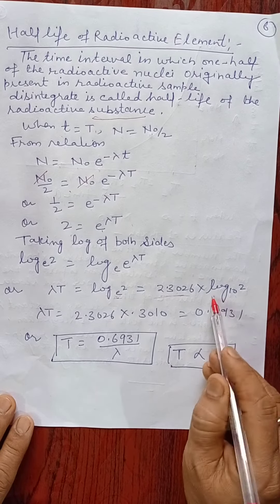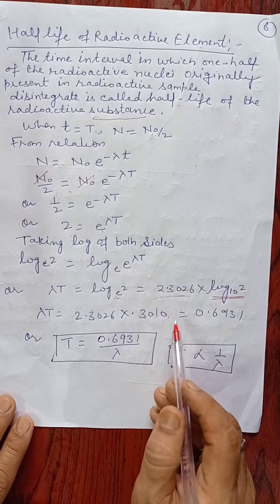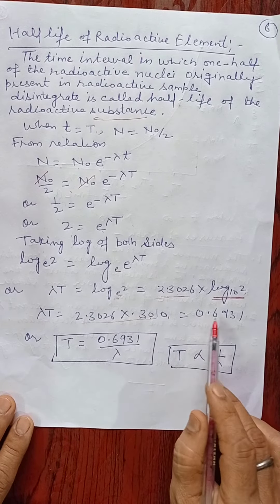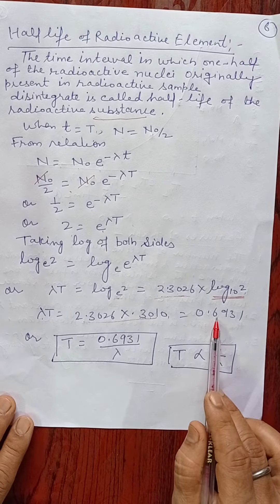So log 2 at base 10, and the value of log 2 at base 10 is 0.3010. After multiplication we get 0.6931. So λT equals 0.6931.